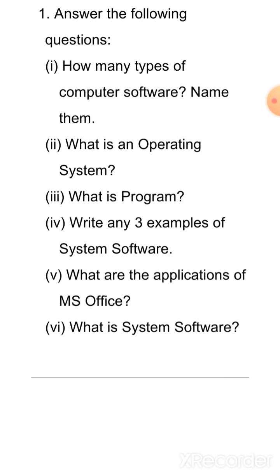The first holiday homework is from chapter 1, Software and its Type. The first question is, how many types of computer software? Name them. The answer is, the software is of two types, system software and application software. The system software is of three main types, operating system, language processor and utility software. Application software is of two types, general purpose application software and special purpose application software.